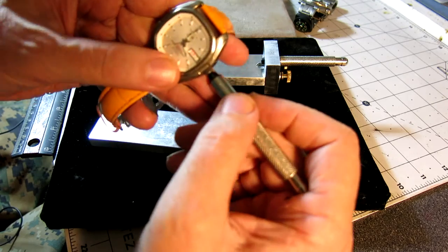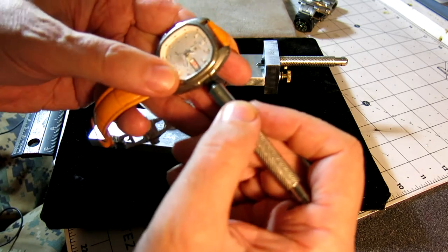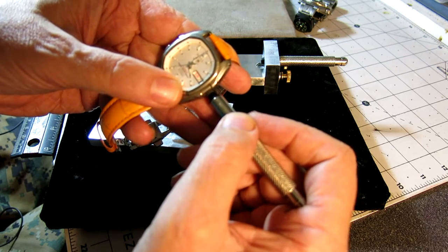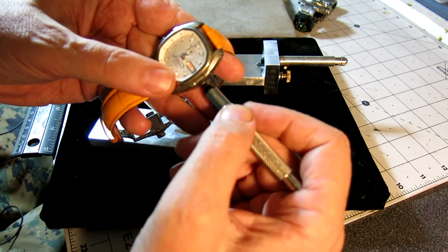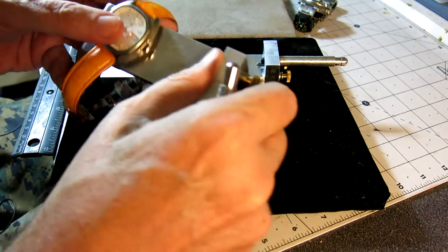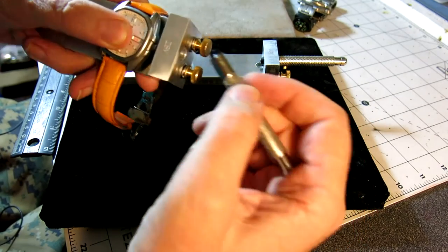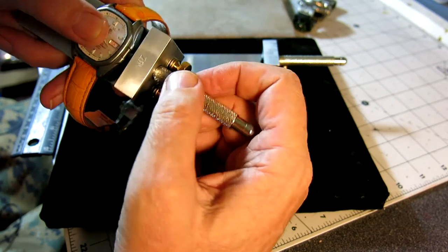That back and forth movement will put strain and stress on your crown stem. So the idea of this tool is that it allows you to use this hand winder and keep it in alignment and keep it straight.